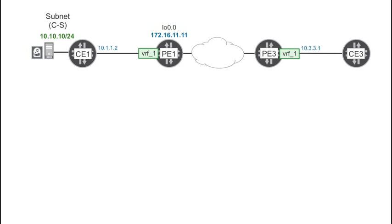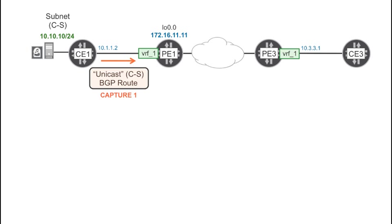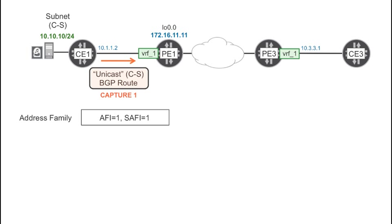Let's see these routes in detail. The 10.10.10.0/24 prefix belongs to the address family INET unicast — in other words, AFI1 SAFI1. However, this is only true if the CE is using multi-protocol BGP. Although this is a valid option, in this workshop the CEs are configured to use plain vanilla BGP, which has no multi-protocol extensions. So the address family identifiers are not included explicitly in the BGP update.